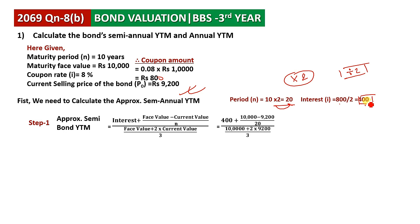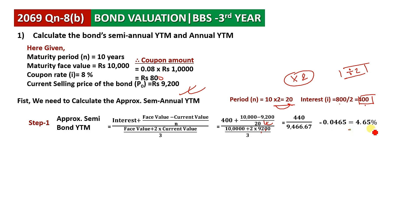Substituting into the formula: 400 plus (10,000 minus 9,200) divided by 20 — since 10 years becomes 20 semi-annual periods — divided by (10,000 plus 2 times 9,200) divided by 3. The answer is approximately 4.65%. So our approximate semi-annual YTM is 4.65%.